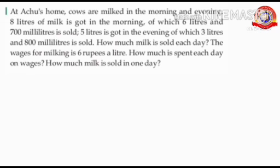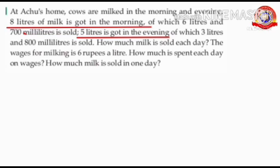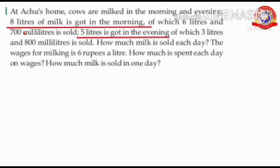How much milk is sold in one day? How much milk is got in the morning? Yes, 8 liters. How much milk is got in the evening? 5 liters. First, we have to find out the total quantity of milk got each day. To find out the total quantity of milk, add 8 liters and 5 liters together. Total quantity of milk got each day equals 8 liters plus 5 liters equals 13 liters.